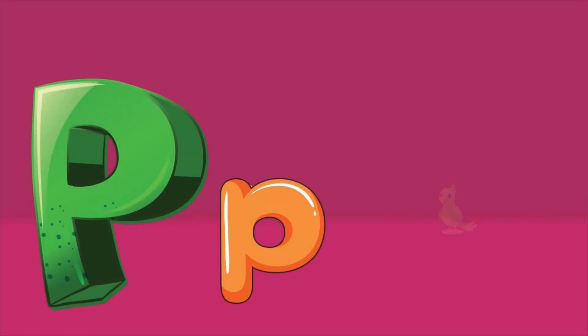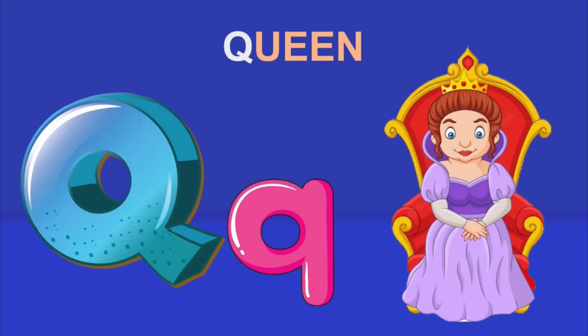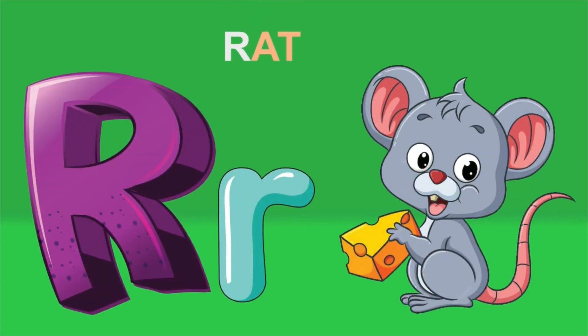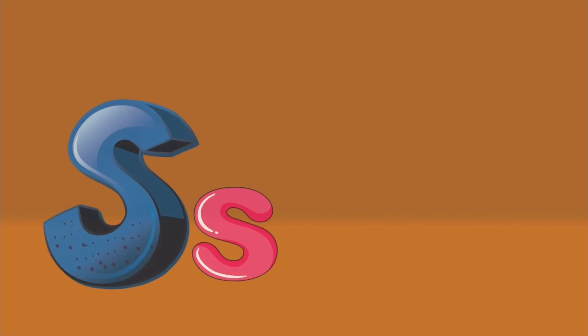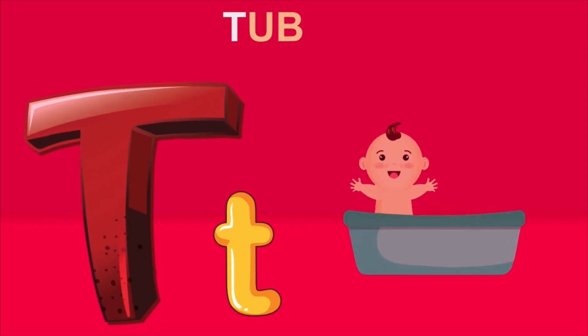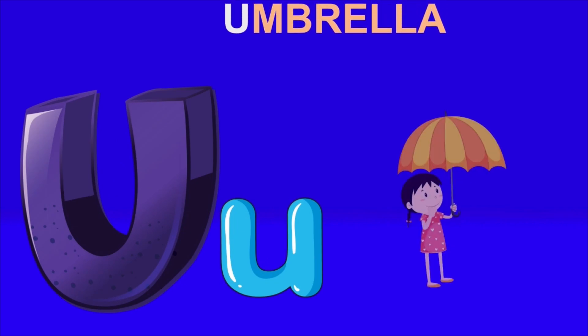P for parrot. Q for queen. R for rat. S for sun. T for tub. U for umbrella.